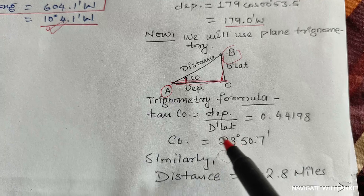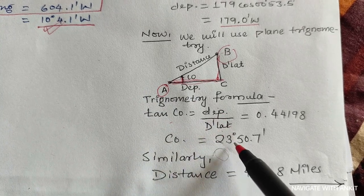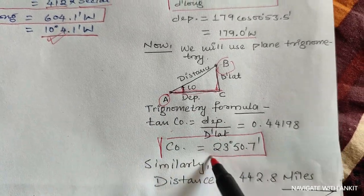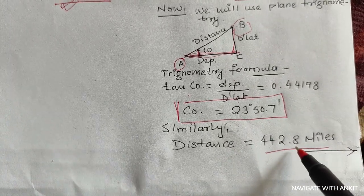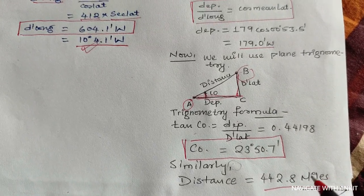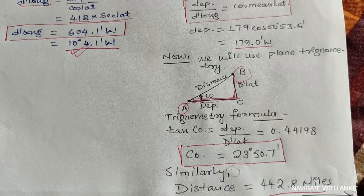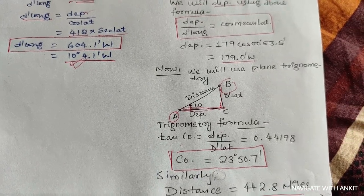Using the formula tan course equals departure upon D'lat, we can find the course. Similarly, using another formula of plane trigonometry, we can easily find the distance between them, that is 442.8 miles. So this much is important from the topic of difference between parallel sailing and plane sailing. Hope you have liked it. Thank you.